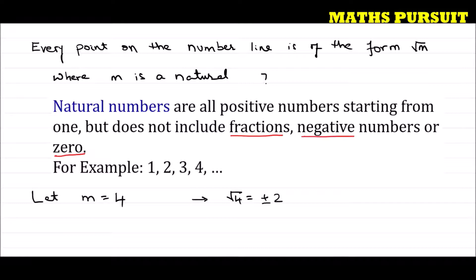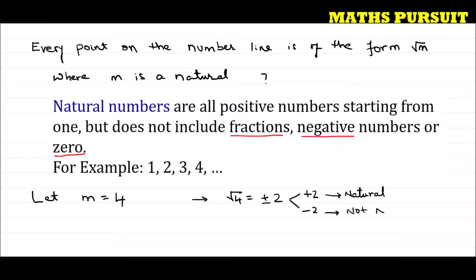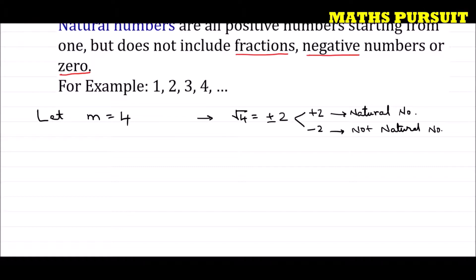Root 4 is equal to plus or minus 2. So we get two results: plus 2 and minus 2. Because plus 2 times plus 2 equals 4, and minus 2 times minus 2 also equals 4. Here, 4 is a natural number, and when we take root 4 we get plus 2 and minus 2. Plus 2 is a natural number, but minus 2 is not a natural number, because all natural numbers are positive numbers.